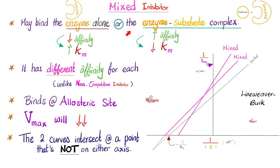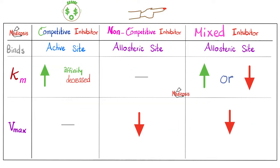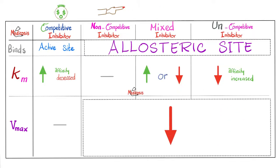If you want to learn about mixed inhibitors, check the last video. Recall that both lines — the old and the new — intersected at a point that is neither on the x-axis nor on the y-axis. With mixed inhibitors, they bind the allosteric site. Km might go down or up. Vmax will always go down.